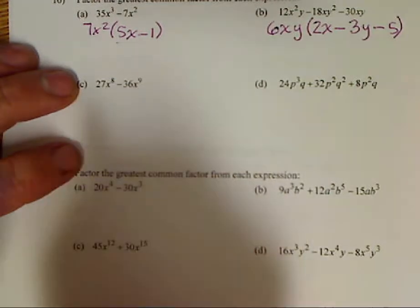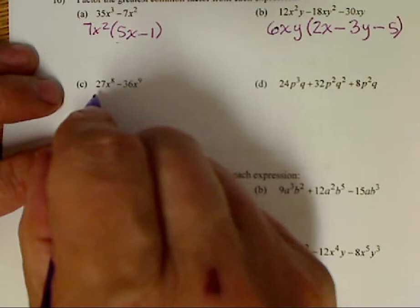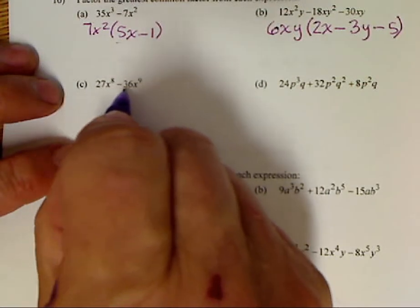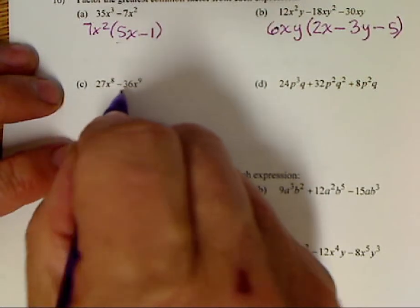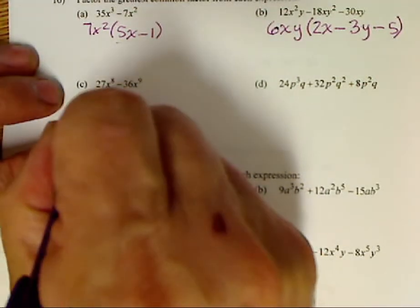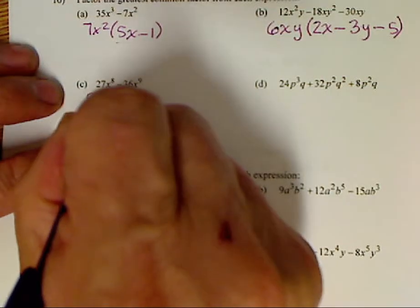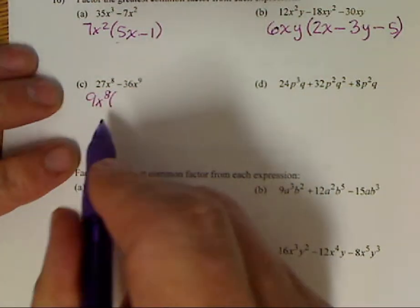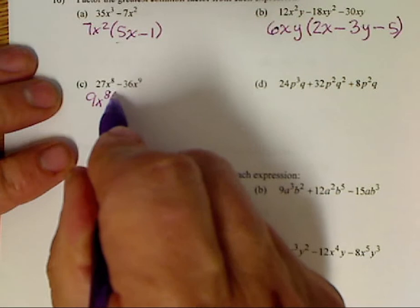We factor out the x to the 8th. And we can factor out, well, 9 goes into both 27 and 36. So 9x to the 8th.